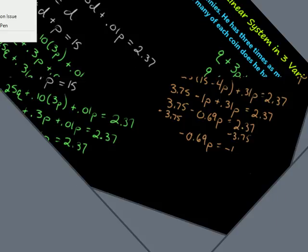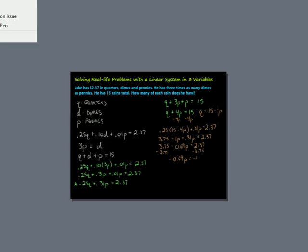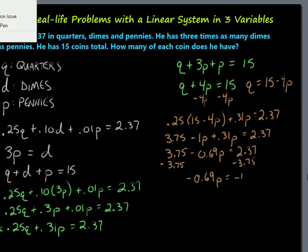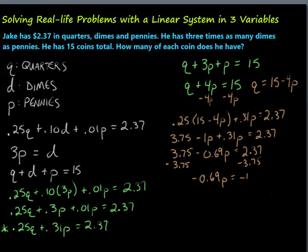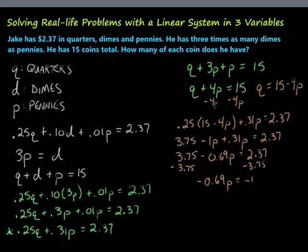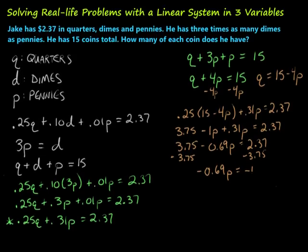Divide by the negative 0.69, and we get P is 2. So that means there's 2 pennies.